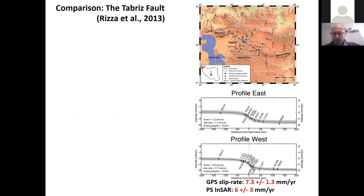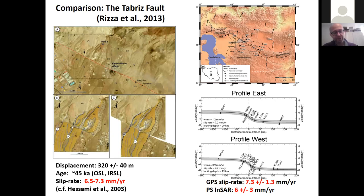Making comparisons of short-term and long-term deformation across Iran: this example from Meghrazi et al. 2013 on the Tabriz fault shows close agreement. Short-term GPS gives 7.3 ± 1.3 mm/yr; InSAR gives 6 ± 3 mm/yr. Looking at geological rates — displaced alluvial fan offset by about 320 meters, luminescence dating giving slip rates of 6.5 to 7.3 mm/yr — broadly agreeing. We see similar agreement in many studies across Iran.